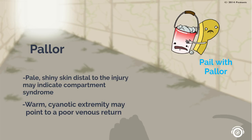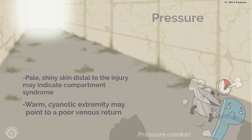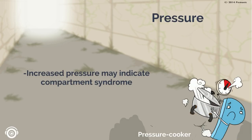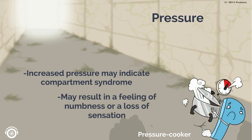Pallor is represented by the pale with pallor. Increased pressure may indicate compartment syndrome and is related to swelling within the cavity. Depending on the severity, this may result in a feeling of numbness or a loss of sensation in the extremity, or cause severe pain. Pressure is represented by the pressure cooker.